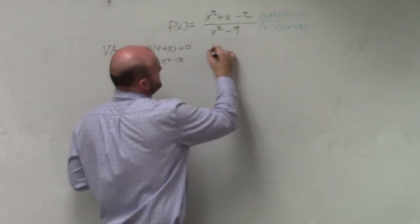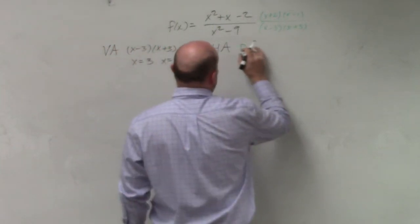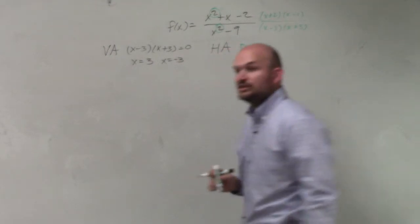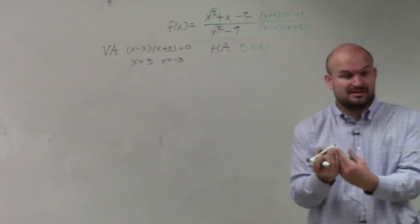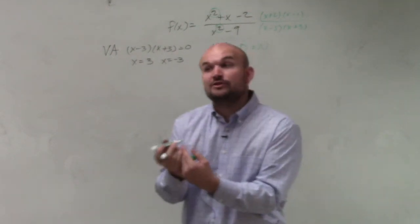All right. The next one is the horizontal asymptote. Now, what we need to know is when the degrees are exactly the same. So remember the last one the denominator was greater, right? The degree in the denominator was greater in the last example. Now the degrees are exactly the same.